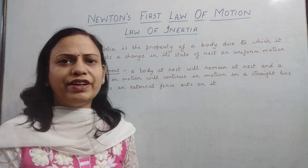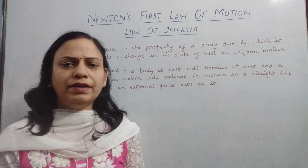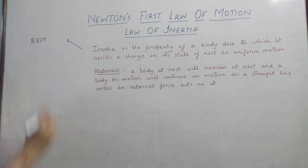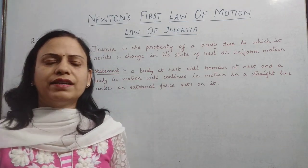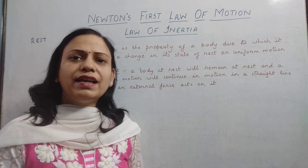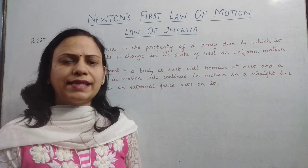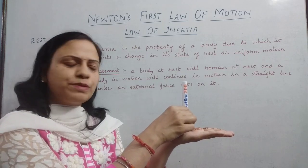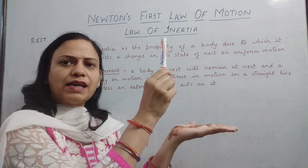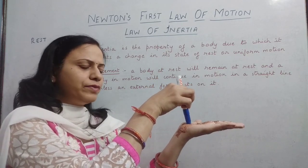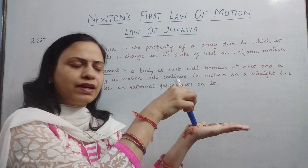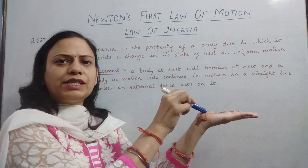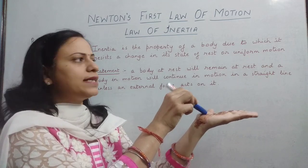So this is inertia. Now, inertia is of three different types. The first one is inertia of rest. Suppose we are sitting in a car, bus, or train and the vehicle is at rest — our body is also at rest. When the vehicle suddenly starts moving, the lower part of our body which was in contact with the vehicle starts moving, but the upper part of our body still tends to remain at rest because of inertia of rest. And that is why we fall backwards. This is inertia of rest.